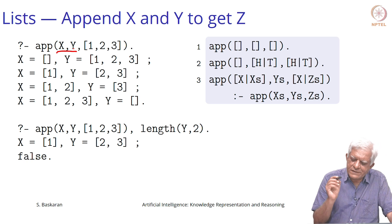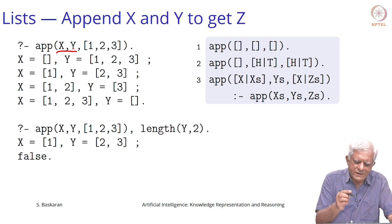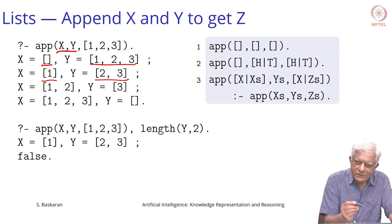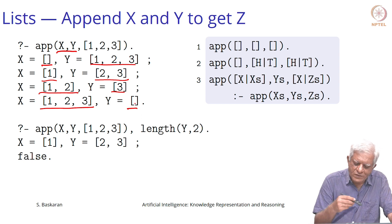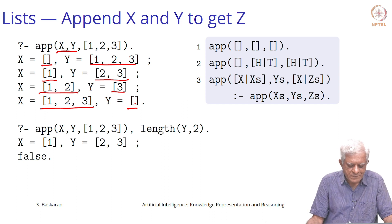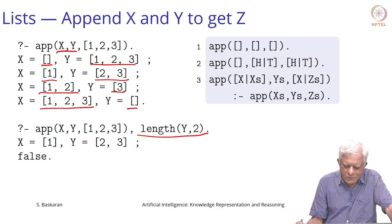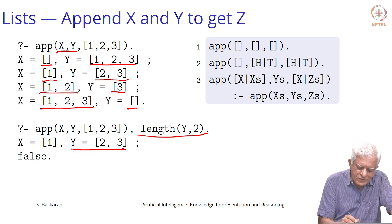If we give two variables in the query — is there an x and a y such that when we append them together you get [1,2,3] — Prolog will enumerate all possibilities. First it says x is the empty list and y is [1,2,3]. Then x is [1] and y is [2,3]. Then x is [1,2] and y is [3]. Finally x is [1,2,3] and y is the empty list. If you add the constraint that length(y) is 2, then it gives only one answer: y equals [2,3].